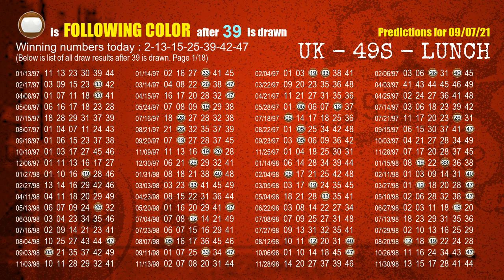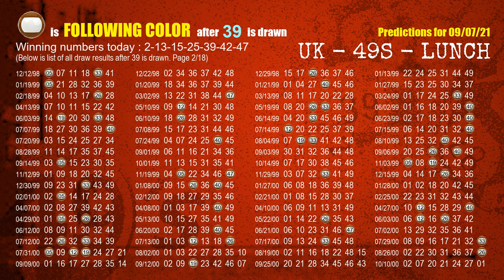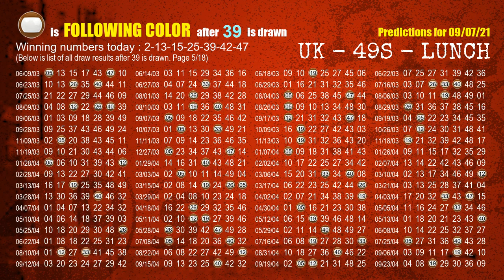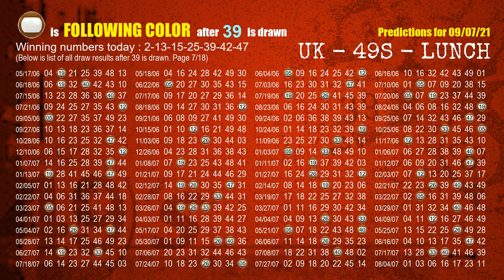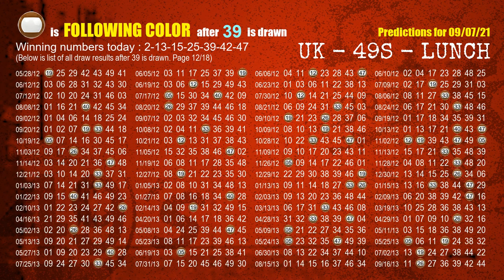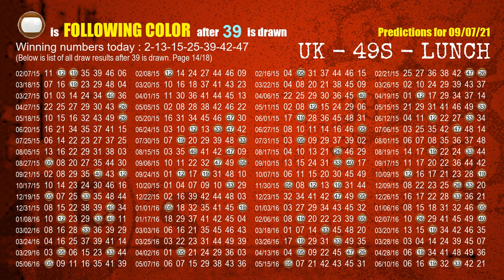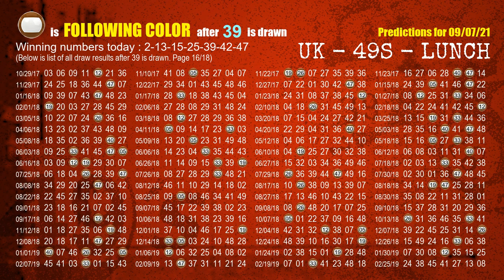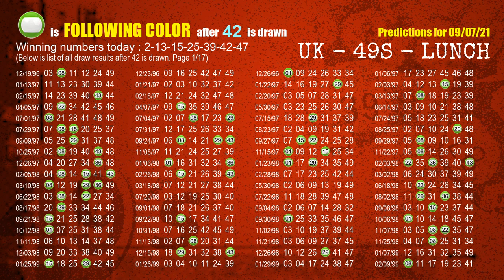The fifth winning number is 39. The most frequently following color is brown when 39 is the winning number in the last draw. The sixth winning number is 42. The most frequently following color is green when 42 is the winning number in the last draw.